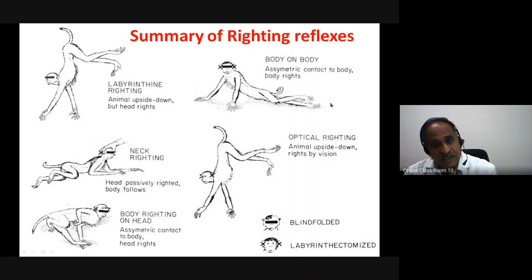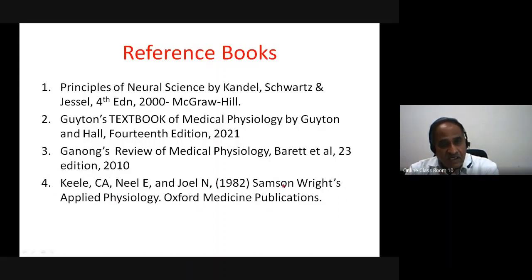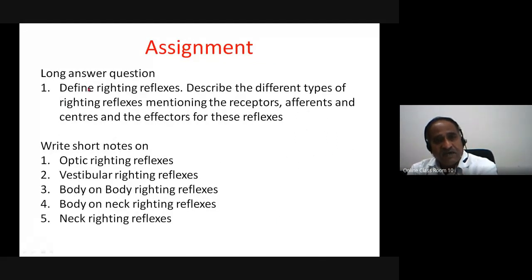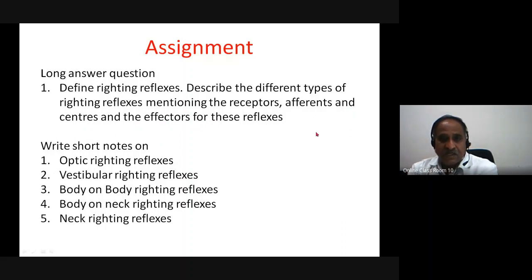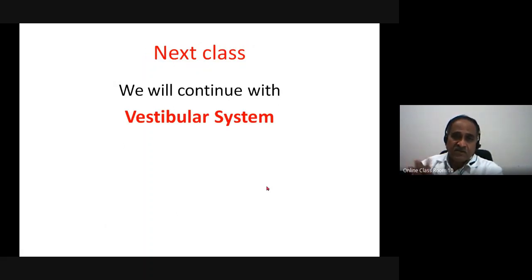Reference books include Kandel, Ganong, and Keele; most detailed information comes from Samson Wright and other books. The assignment is: define righting reflexes and describe the different types of righting reflexes mentioning the receptors, appearance, centers, and effectors. Short note questions include optic righting reflexes, vestibular righting reflexes, body-on-body righting reflexes, body-on-neck righting reflexes, and neck righting reflexes. In the next class, the vestibular system will be covered.